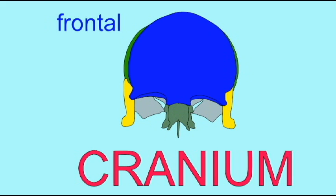From an anterior view, the elements of the cranium which can be seen are the single frontal bone, the pair of parietal bones,